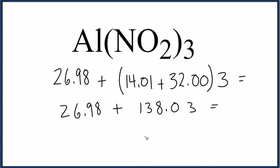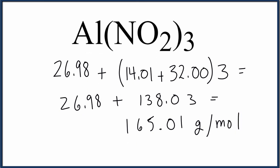And then our final answer would be 165.01. And make sure you have the units grams per mole. And that's the molar mass for Al(NO2)3.